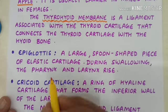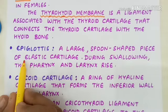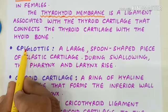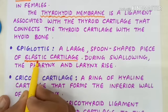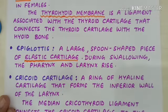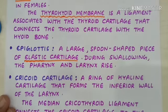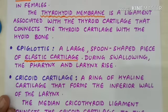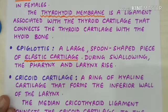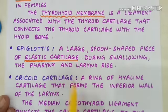The epiglottis is a large spoon-shaped piece of elastic cartilage — it is the only laryngeal cartilage made of elastic cartilage. During swallowing, the pharynx and larynx rise, the epiglottis closes over the trachea, and food is directed towards the esophagus, preventing aspiration.